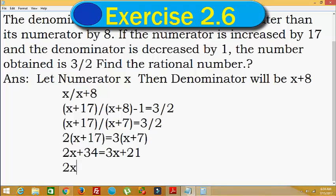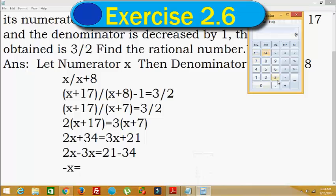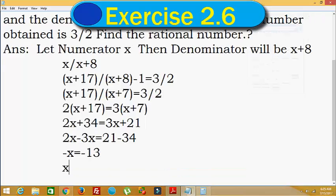2x plus 34 equals 3x plus 21. Moving 3x to the left side: 2x minus 3x equals 21 minus 34. That gives us minus x equals minus 13. Multiplying both sides by negative 1, we get x equals 13.